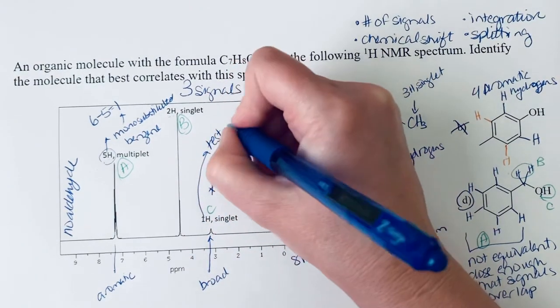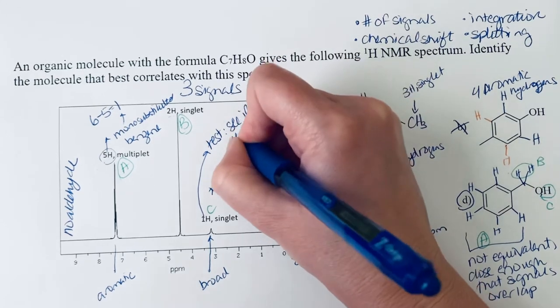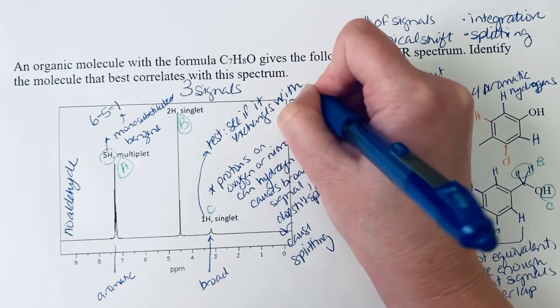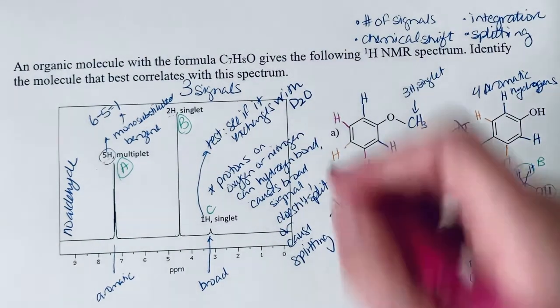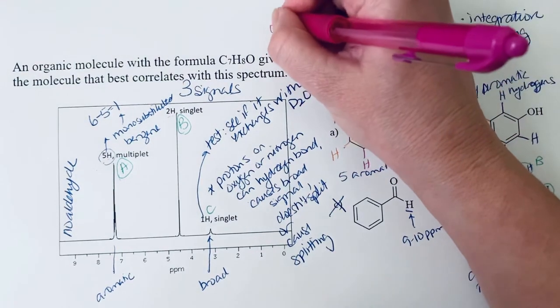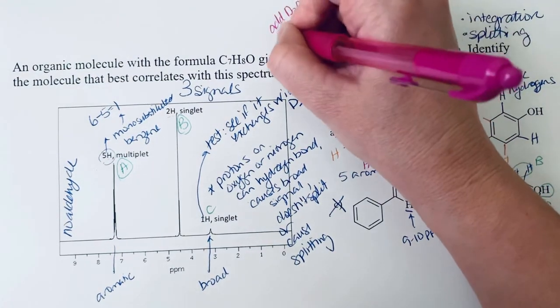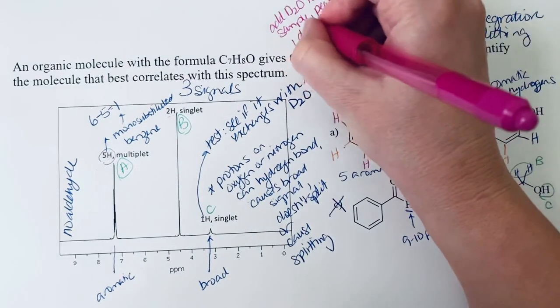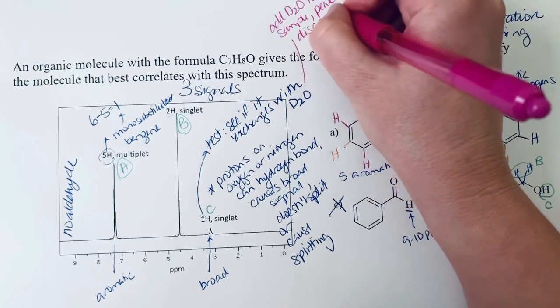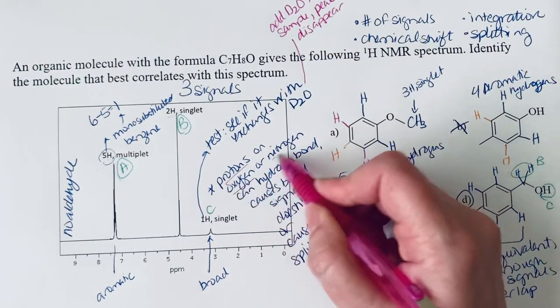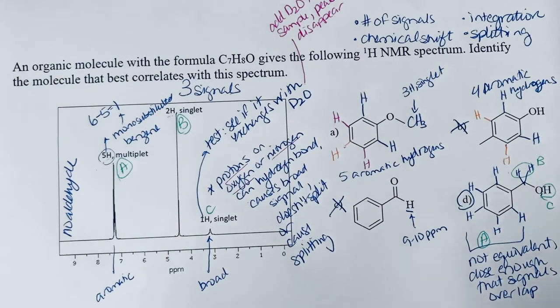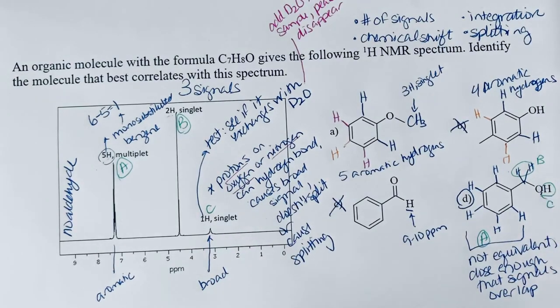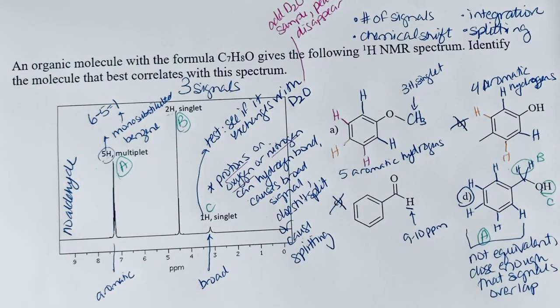So what does that mean? That means you can add a drop of deuterium to the sample. And the peak would disappear if it is a proton on oxygen or nitrogen. So that it would exchange with the deuterated water. So instead of being OH, it would be OD. And deuterium is invisible. So that's why that peak would disappear. So that's another test that you can do.